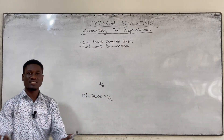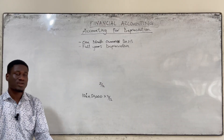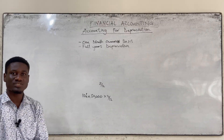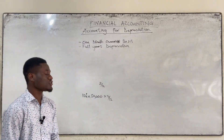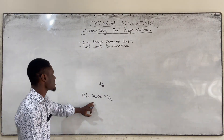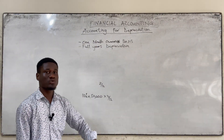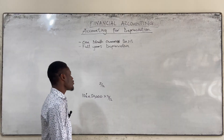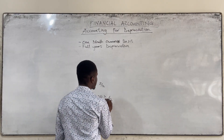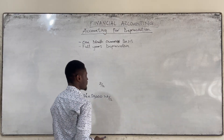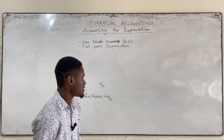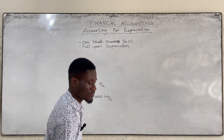So if the asset was bought on 1st July, we know that from July to December is six months. So the asset has been in use for six months and we are going to charge 6 over 12. That's what one month ownership basis is trying to say.